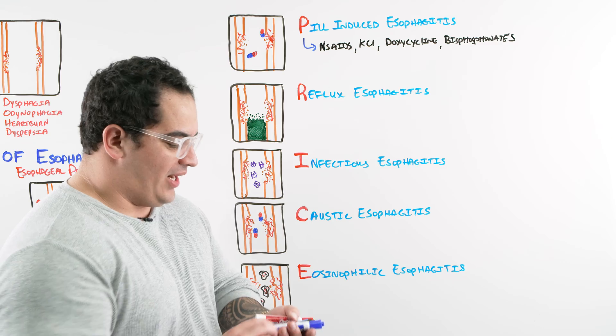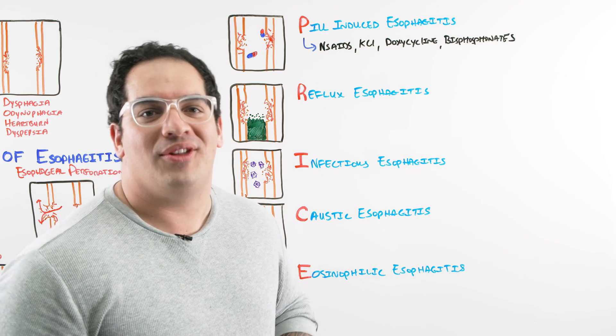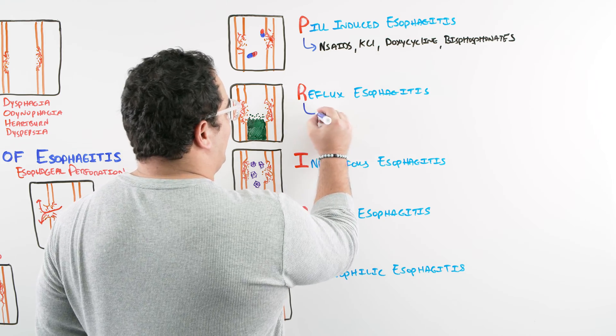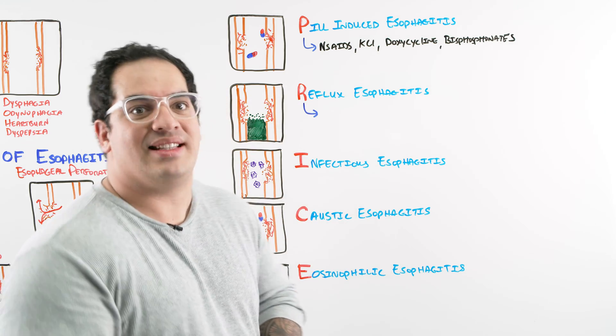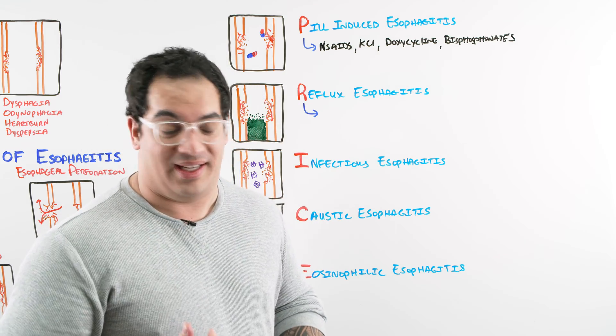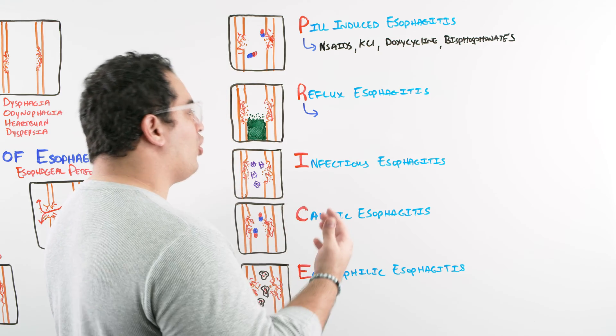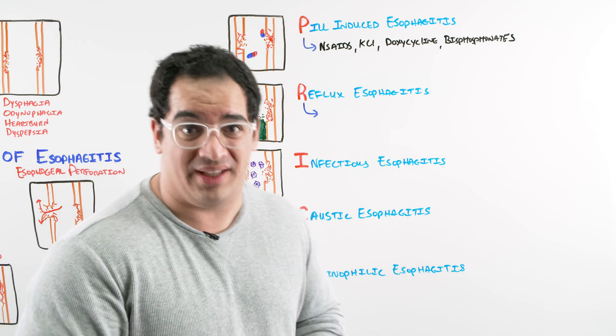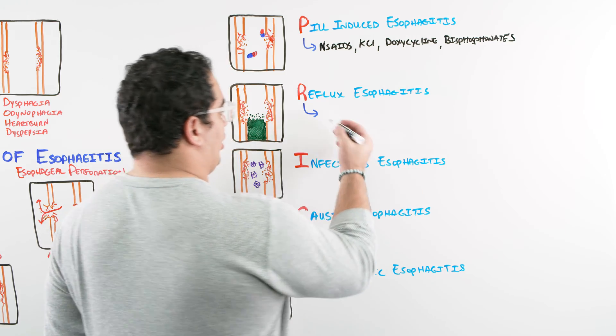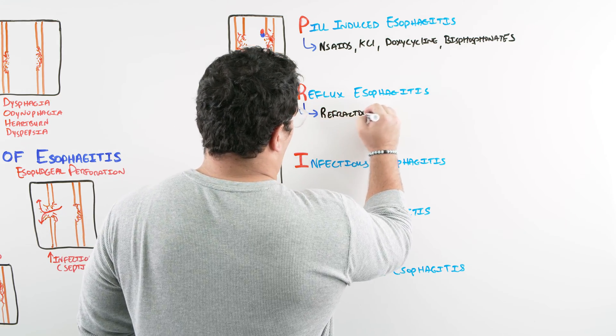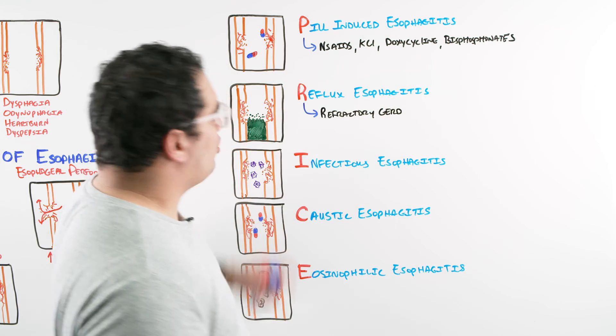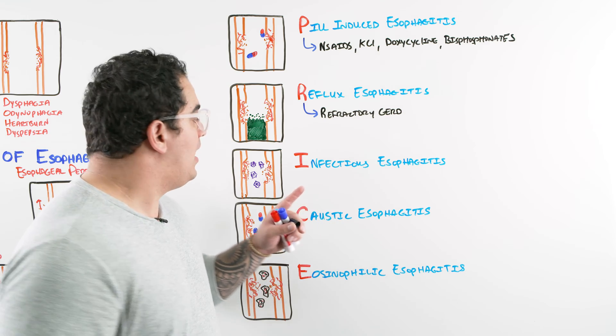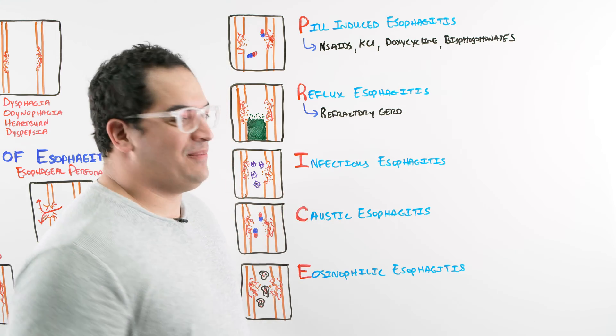If not taken with enough water, if they get stuck there, they have the ability to injure the mucosa and cause massive inflammation. The next one is reflux esophagitis. It doesn't take a genius to figure out what are the particular history features you want to pick up for this patient. This is a patient who has gastroesophageal reflux disease. It's usually the patient with GERD who's having problems with PPIs, not really responding appropriately - usually refractory GERD.